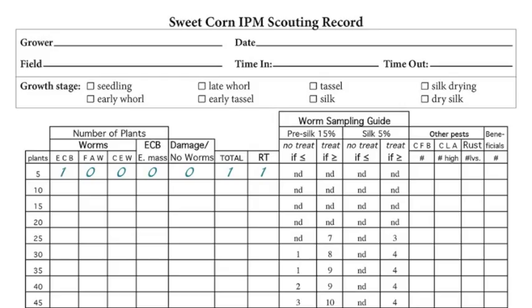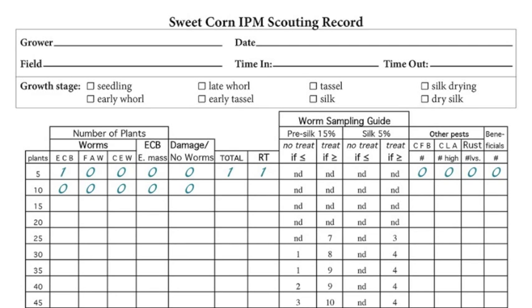The total for this set of five plants is one and the running total is also one for now. No other pests or beneficials were seen, so you will mark down zeros. Moving on to the next five plants, let's say you find no damage, larvae, or eggs on any of them. You will mark down zeros, and the total for this set will also be zero. However, the running total will be one due to the previous five plants.